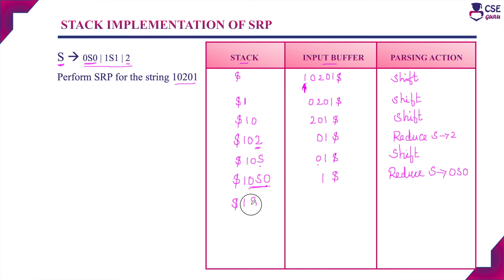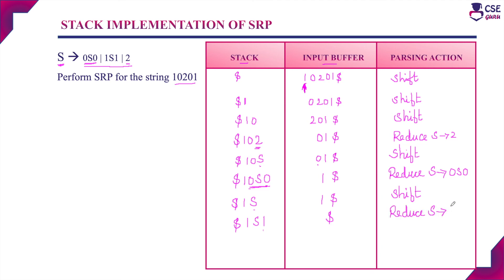The top element of the stack is now S, so the handle may be S or 1 S. There is no matching substring, so we shift the next element into the stack. The next element 1 will be pushed into the stack. The top element is now 1, so we check for a handle — 1, or S 1, or 1 S 1. There is a matching substring for 1 S 1, so we can reduce it to S. Now the input buffer contains only the dollar symbol, and we reduce the handle: S derives 1 S 1. The stack now contains the top element S and the input buffer contains only the dollar symbol.